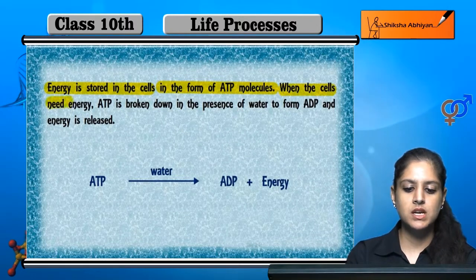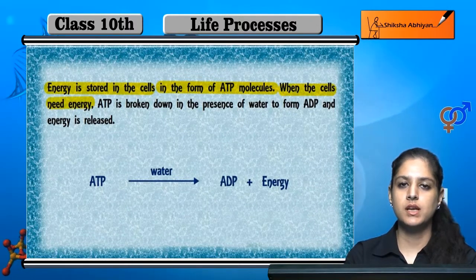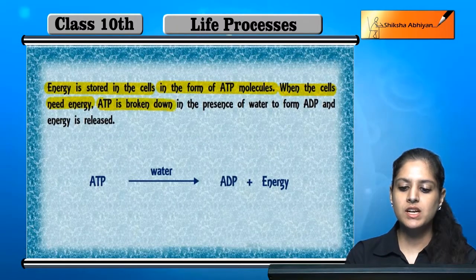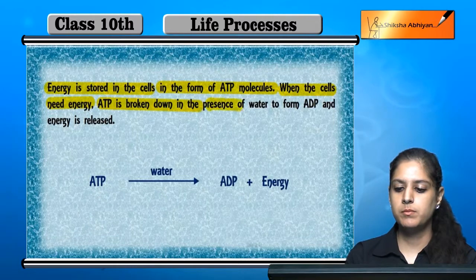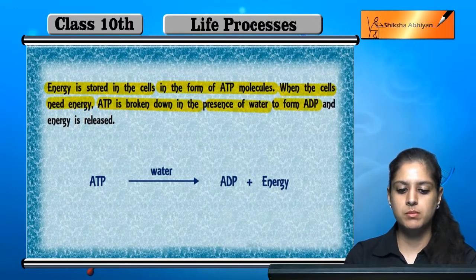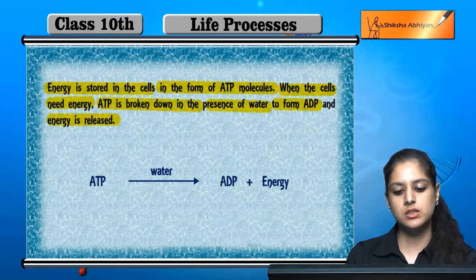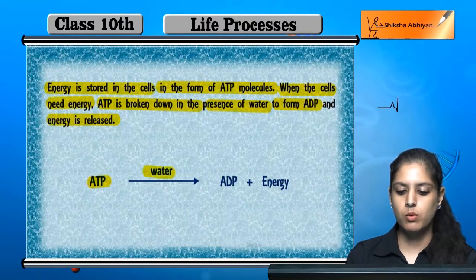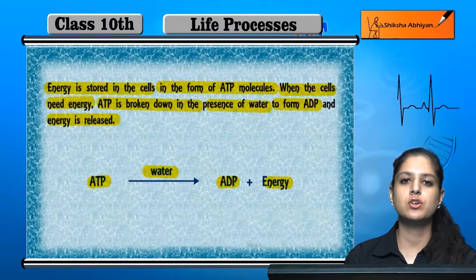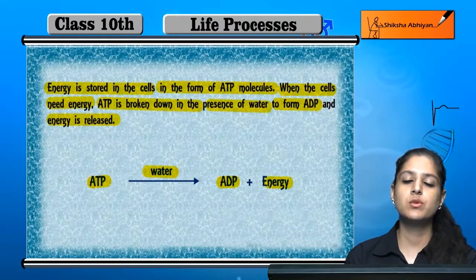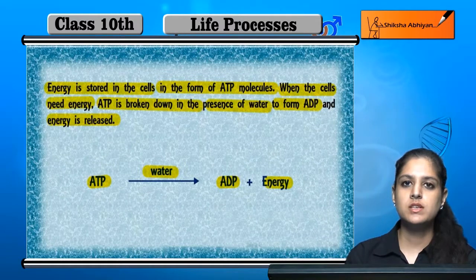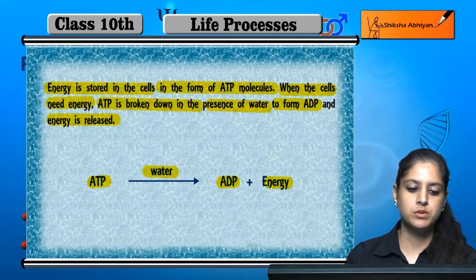When the cells need energy, ATP breaks down in the presence of water. Then ADP and energy are released. ATP in the presence of water gives ADP and energy. This is the usable energy form. In this way, energy is produced in our body.